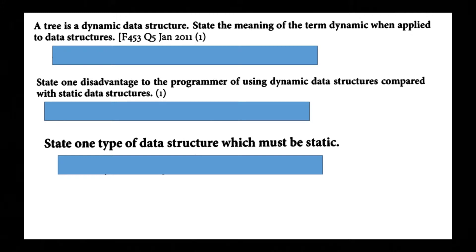So a tree is a dynamic data structure stating the meaning of the term dynamic when applied to a data structure. So it's when the size changes as data is added and removed so the size is not fixed.